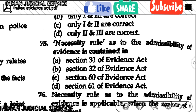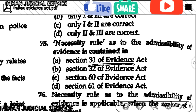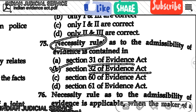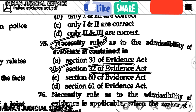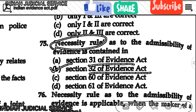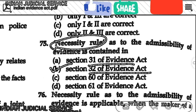Question number 75: The necessity rule as the admissibility of evidence is contained in which section? The answer is option B — Section 32 of the Evidence Act. The rule of necessity applies when there is no other opportunity — such as when persons are dead, cannot be found, are outside the court's jurisdiction, or cannot be brought without excessive expense — requiring secondary evidence to be used instead.